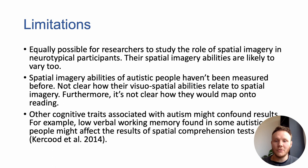It's also not clear whether the visuospatial skills of autistic people mentioned earlier would relate to spatial imagery skills in reading. Furthermore, it's not clear how these abilities would map into reading. Another limitation is that other cognitive traits associated with autism might affect the results of any test conducted — for example, the low verbal working memory found in some autistic people might affect the results of spatial comprehension tests.